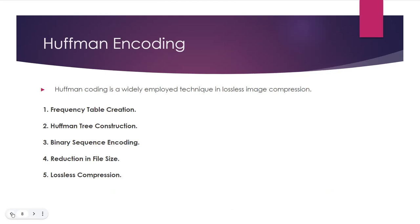Then Huffman tree creation takes place. It is constructed using the frequency information from the table, built such that shorter codes are associated with more frequently occurring pixel values and longer codes with less frequent ones. Each pixel value in the image is then replaced with its corresponding Huffman code during compression, resulting in a more efficient representation with shorter binary sequences for commonly occurring pixel values. This leads to a reduction in file size, achieved by exploiting the variable-length coding principle and adapting to the frequency distribution of pixel values.